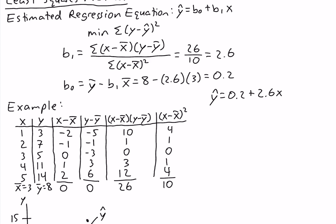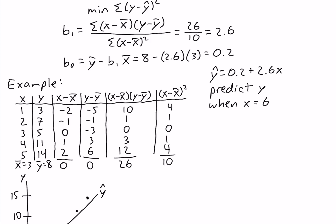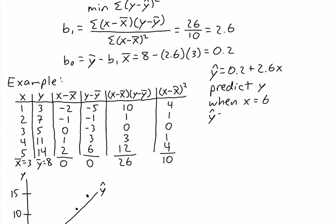Those are the interpretations of our two coefficients, b0 and b1. We can also use the estimated regression equation to predict the value of y for a given value of x. Suppose you were asked to predict y when x equals 6 — all you do is plug 6 into the estimated regression equation.